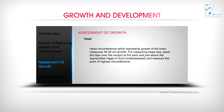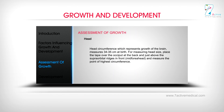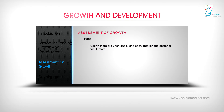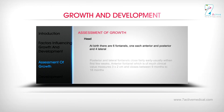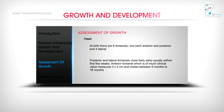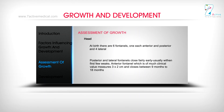Head: Head circumference, which represents growth of the brain, measures 34 to 35 cm at birth. For measuring head size, place the tape over the occiput at the back and just above the supra-orbital ridges in front at the mid-forehead, and measure the point of highest circumference. At birth, there are six fontanels — one each anterior and posterior, and four lateral. Posterior and lateral fontanels close fairly early, usually within the first few weeks. The anterior fontanel, which is of much clinical value, measures 3 x 2 cm and closes between 9 months and 18 months.